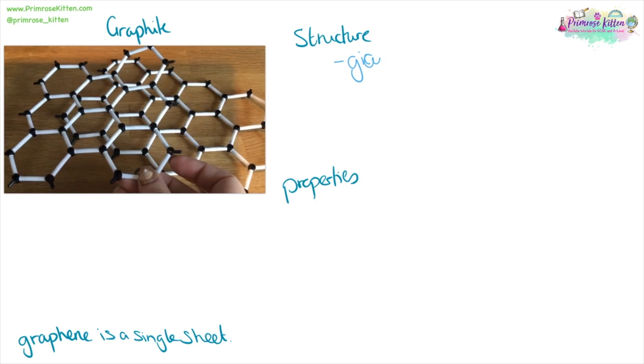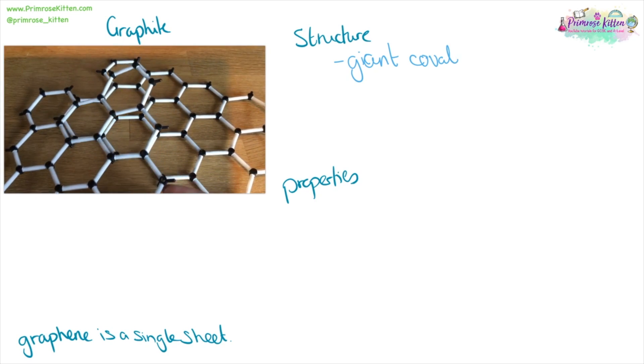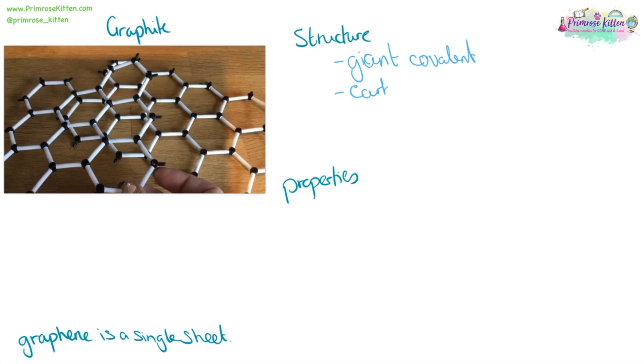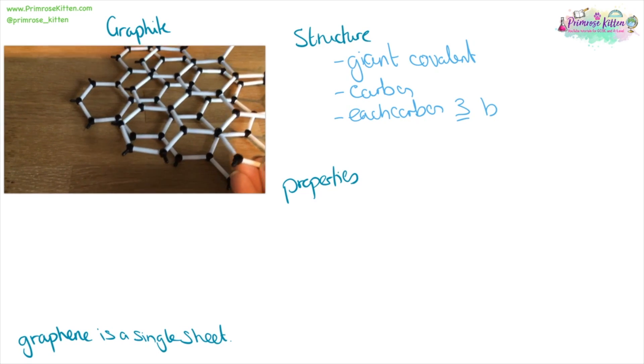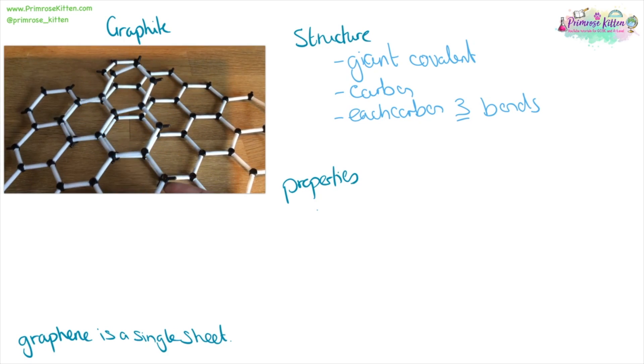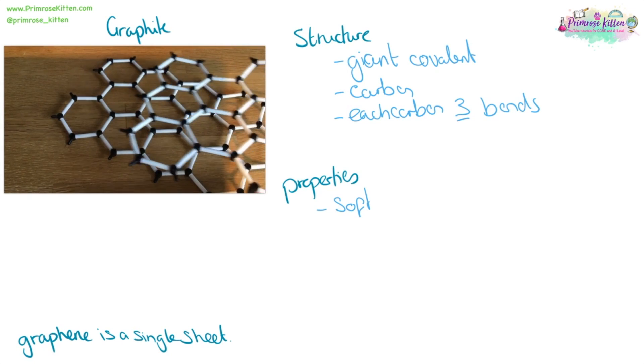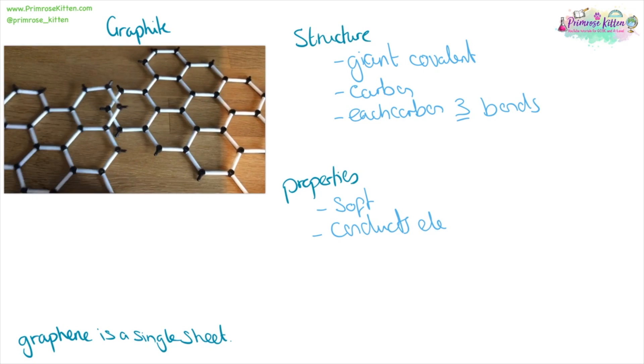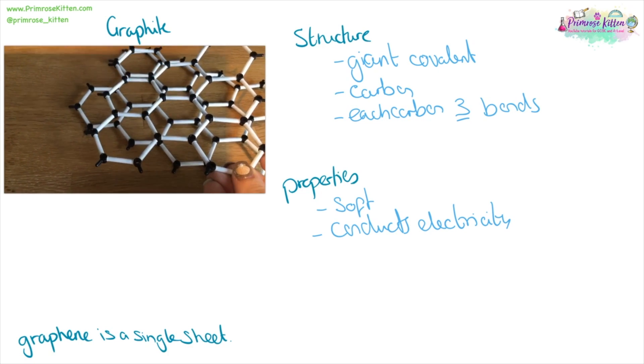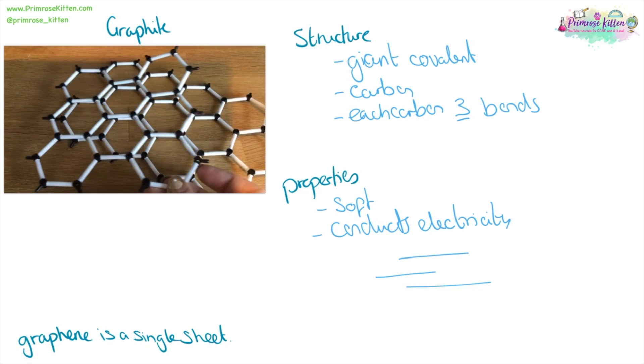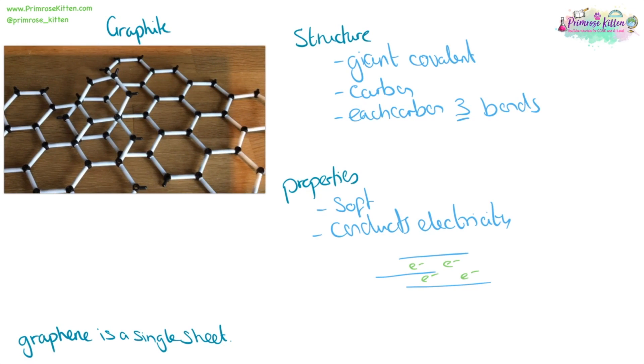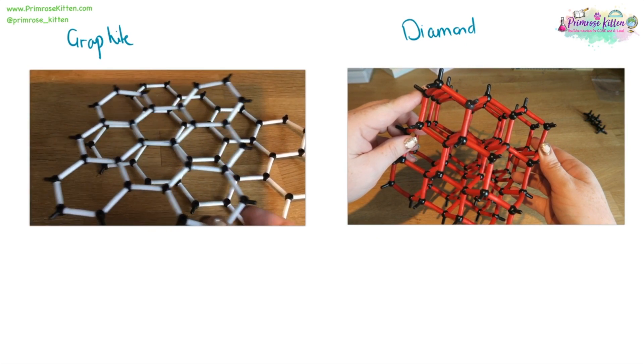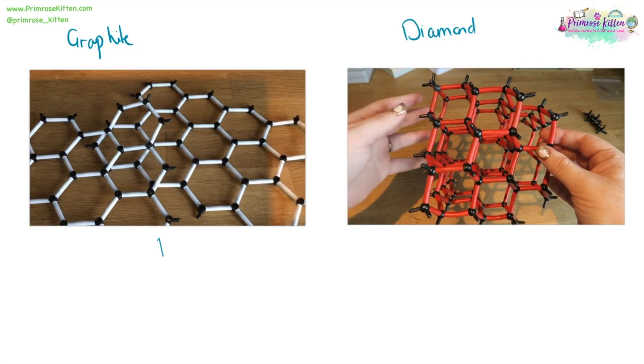Graphite is also a giant covalent compound. It is like diamond, pure carbon. But each carbon makes three bonds to other carbons, not four like in diamond. The properties are that it is soft and it conducts electricity. Because it is in sheets and there is a spare electron floating around in between these, that means it will conduct electricity. Graphite is what you find in pencils. Graphene is just a single sheet.